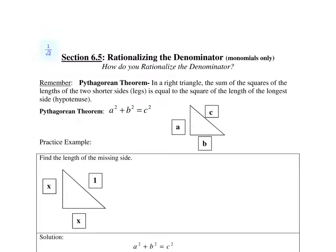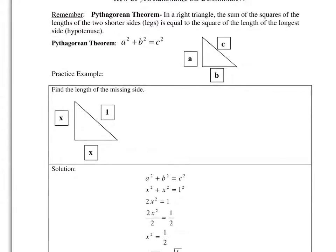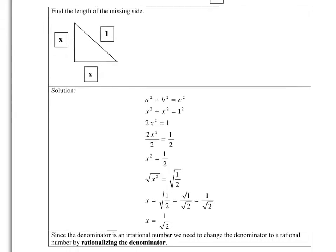In this video, we're going to learn how to rationalize the denominator. This is section 6.5 of Al Grosch's book, Developmental Math 2. In this first example, there's just a review of the Pythagorean Theorem.